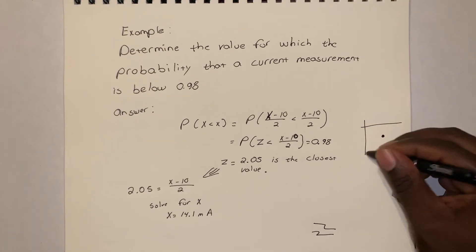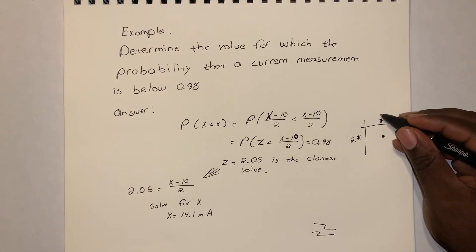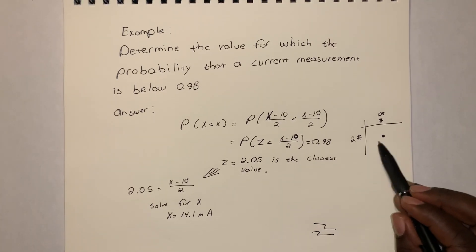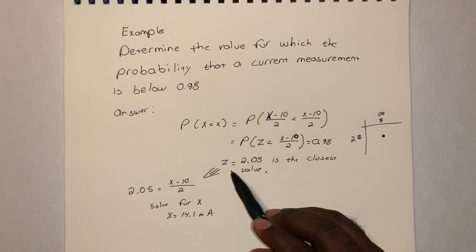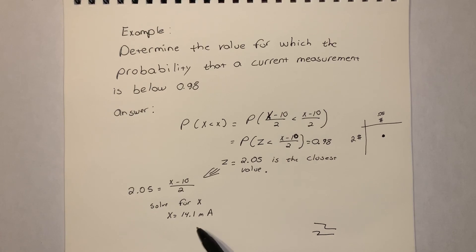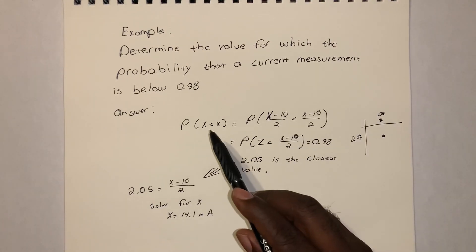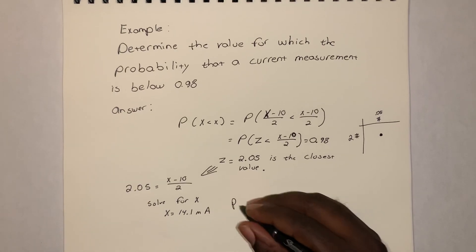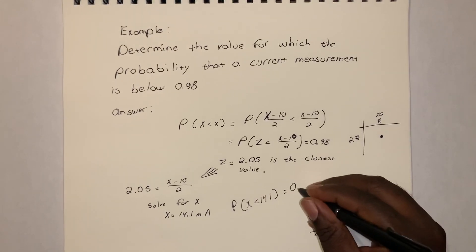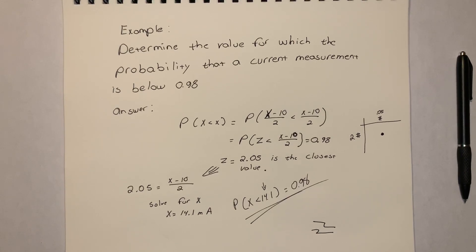From the table, the row value is 2.0 and the column value is 0.05, giving Z = 2.05 as the closest to 0.98. Setting (x − 10)/2 = 2.05 and solving: x = 2(2.05) + 10 = 14.1 milliamps. So P(X < 14.1) = 0.98 — the current measurement has a 98% probability of being below 14.1 milliamps.